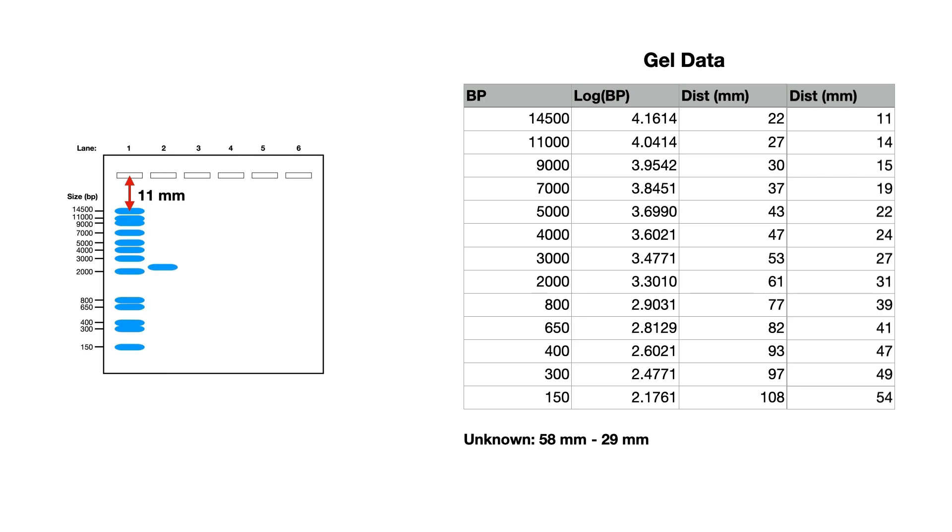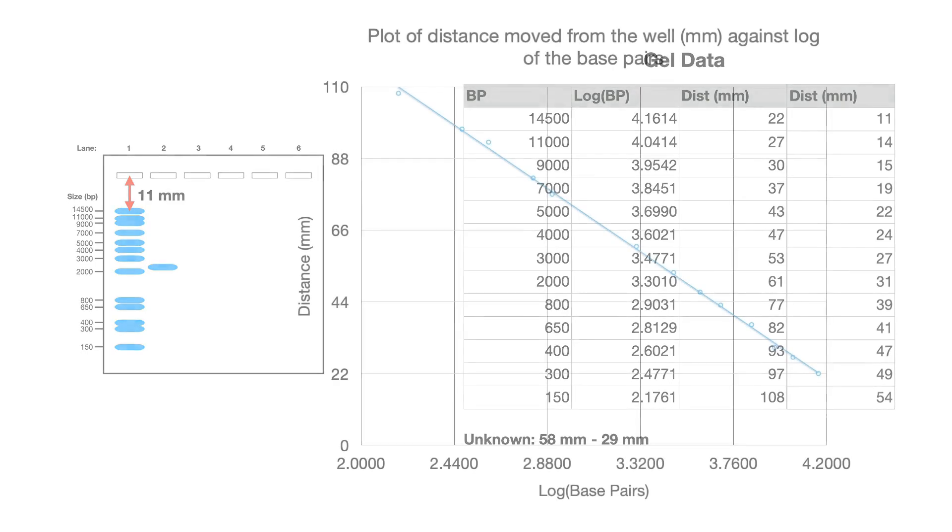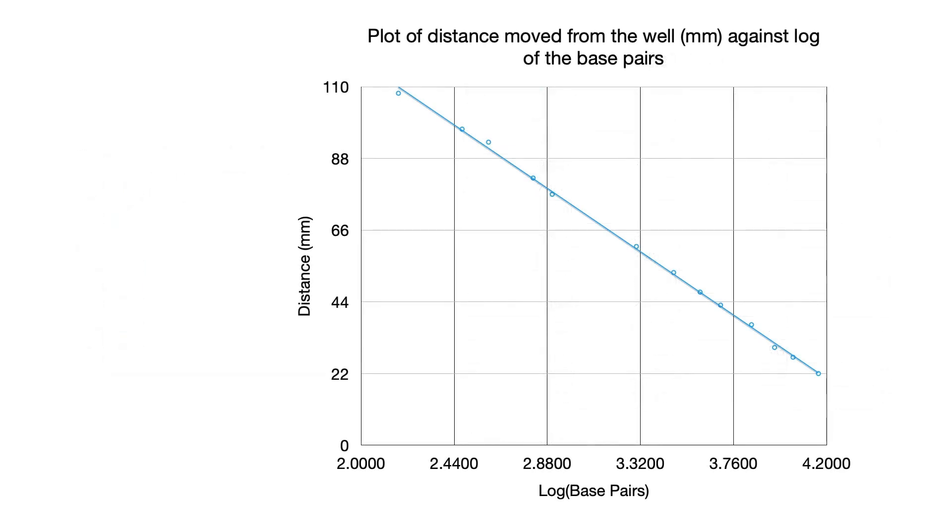Now if we take the original data from that larger gel where we had the 22 millimeter band and plot a graph of it we should get something that looks like this. We put the log base pairs along the bottom because that's the thing that we know. We know the base pair sizes of the bands, we know the log values, and we put the distance up the side.